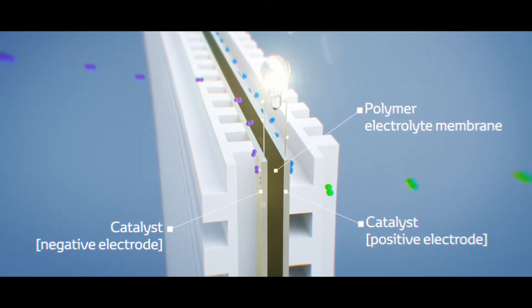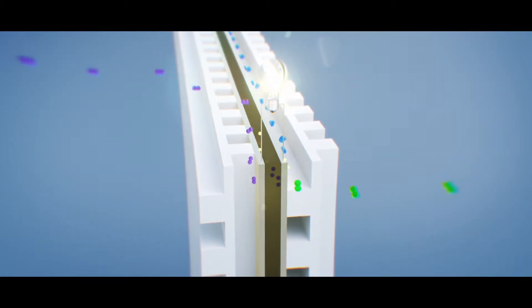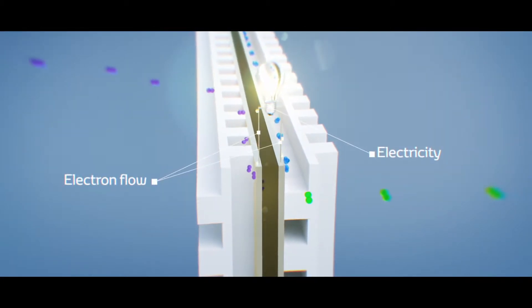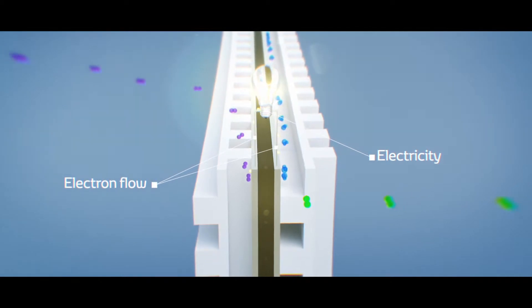Hydrogen is supplied to the negative anode and activates, releasing the electron. Then the electron flows to the positive cathode to generate the electricity.